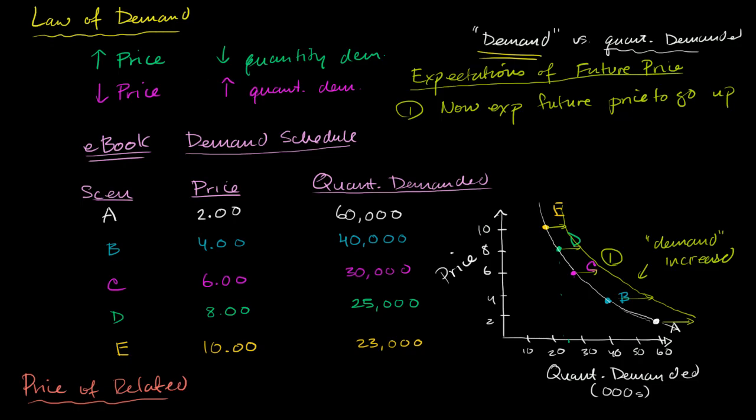And now we can just take the other side of that. Imagine what happens in scenario two. Before, people were neutral. That was our curve right there. They didn't have any opinion about whether future prices were going to go up or down. Or maybe they just assumed they were going to stay the same. And now they expect future prices to go down.